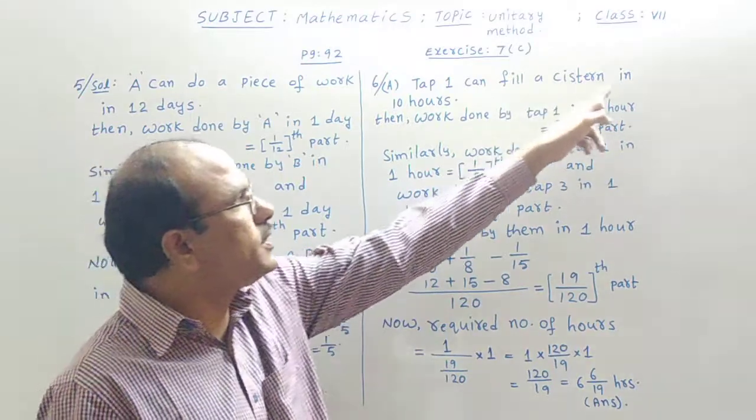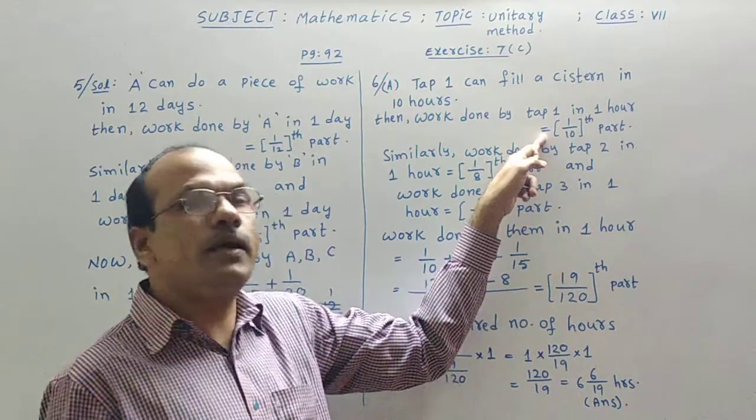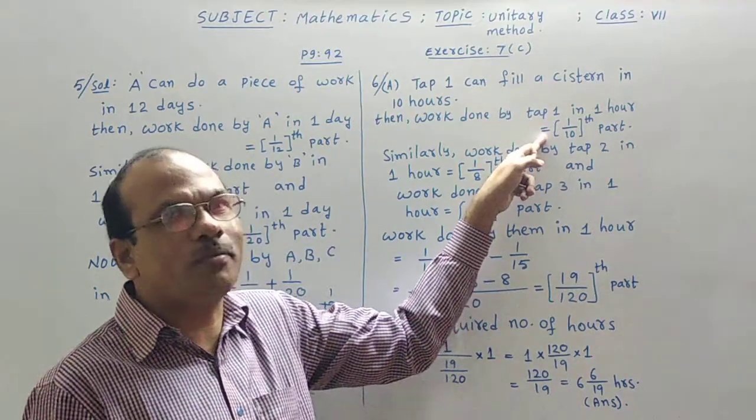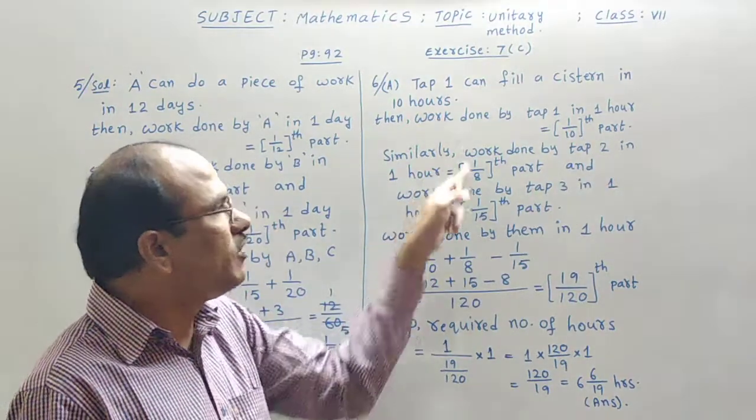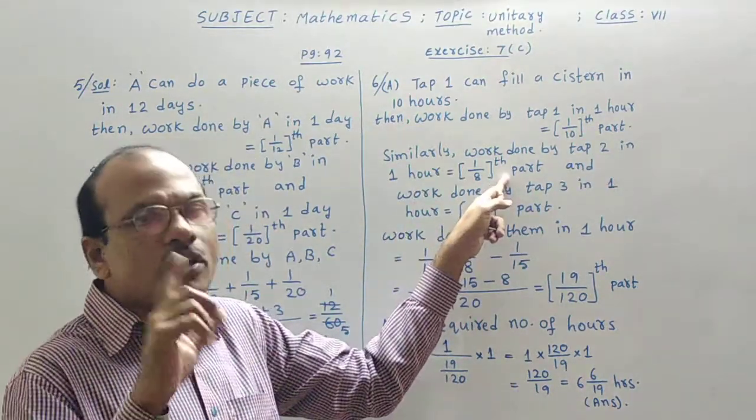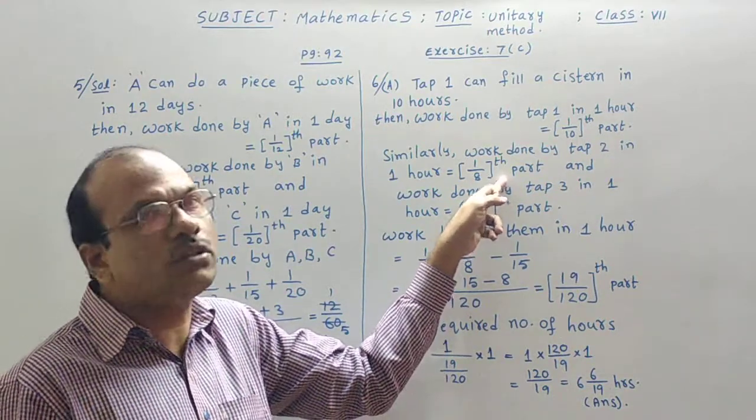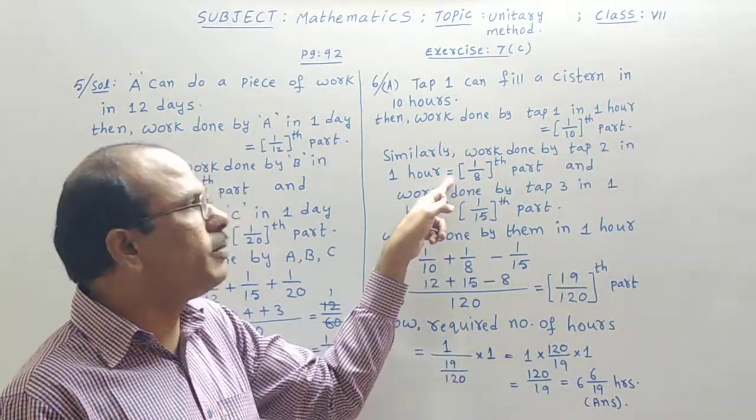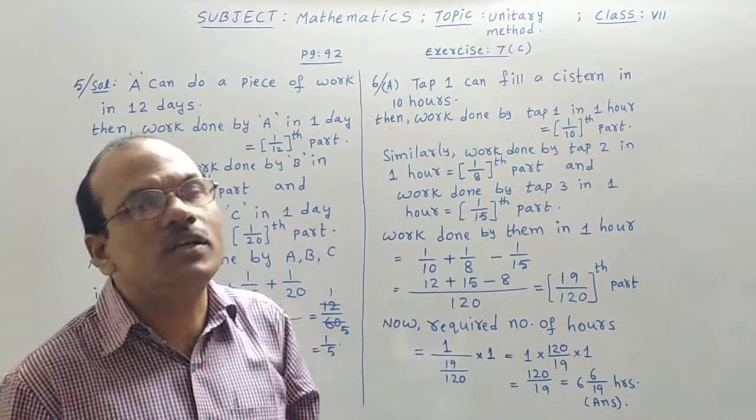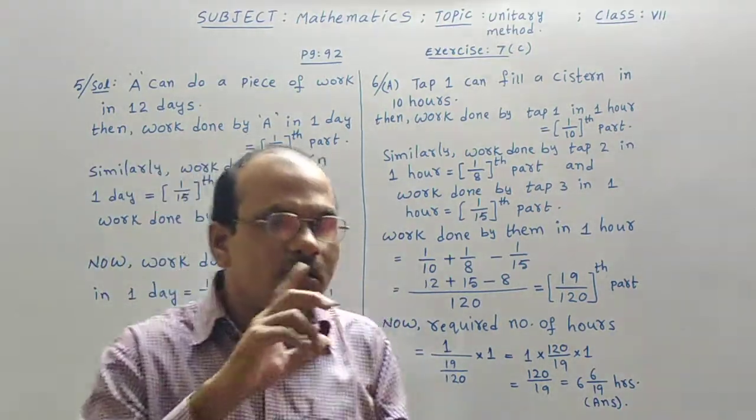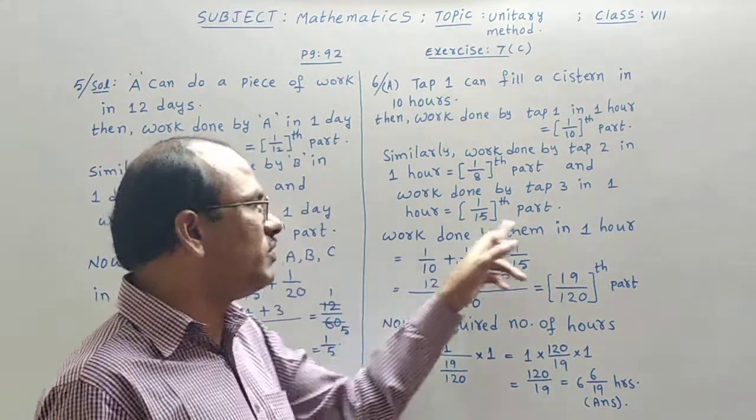Tap one now. Can fill your cistern in ten hours. Then work done by tap one in one hour, one by tenth part. We have seen the method of doing it. Similarly, work done by tap two in one hour, one by eight part. Because in eight hours of time, the tap B alone can fill the whole cistern, they said. That's why in one hour, one by eight part. And the work done by tap three in one hour is one by fifteenth part. Because it needs fifteen hours of time to empty the tank, they said. So that one by fifteenth part.